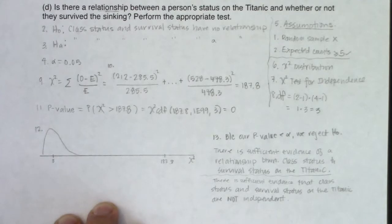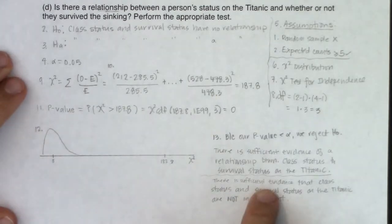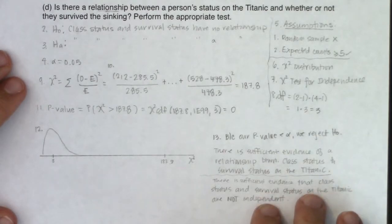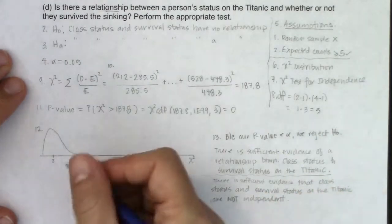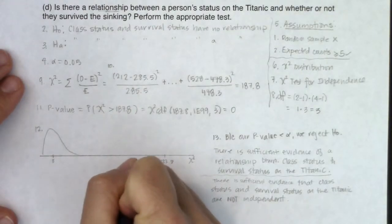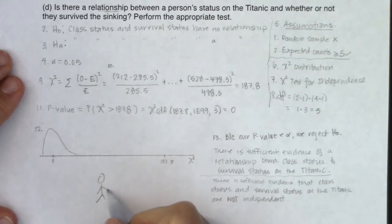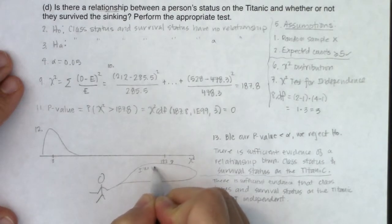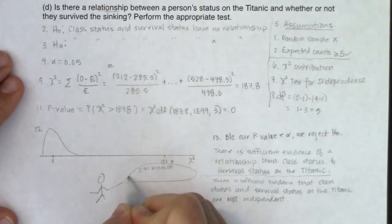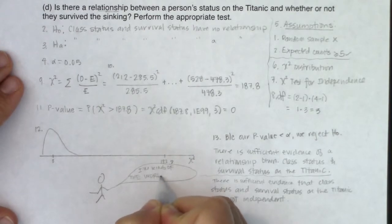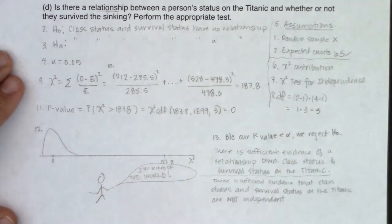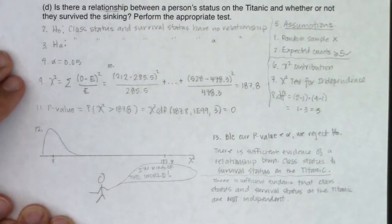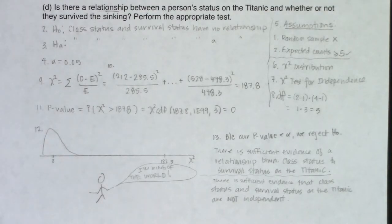We have evidence that class status and survival status are not independent. It is clear that the more money you had, the more likely you were to make it off the ship. I've watched the Titanic movie many times — in '97, then again in 3D — and I still don't want the ship to sink at the end. With that, we're going to look at some multiple choice questions next and practice chi-squared tests for independence.